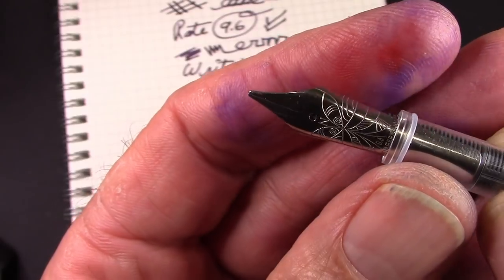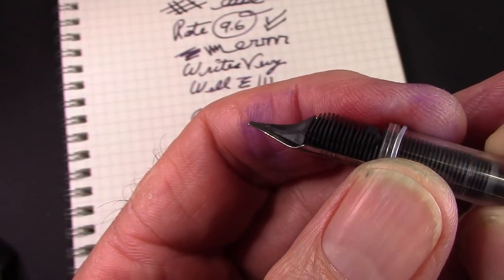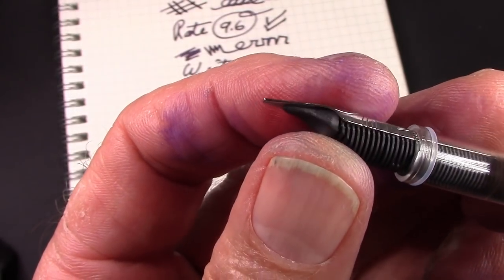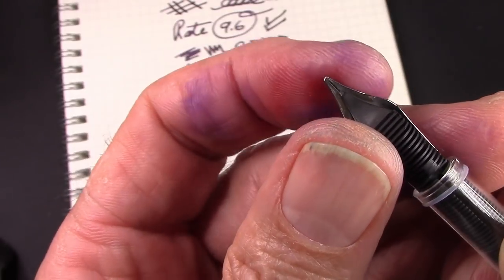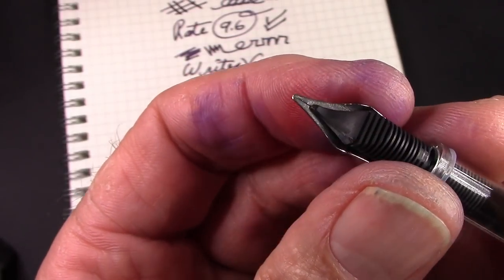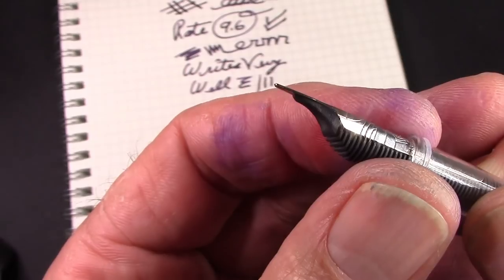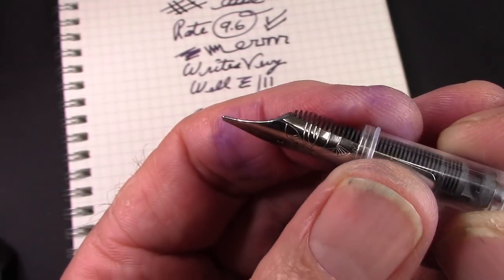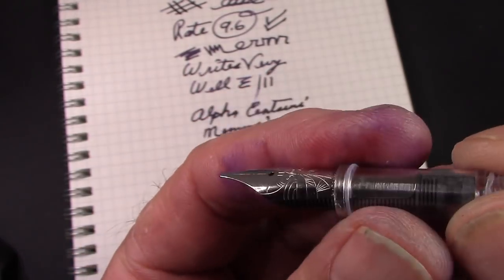That makes it extremely easy to swap in and out. You don't have to worry about bending fins and pulling nibs. That's the same distance between the end of the feed that we had on the broad, and it wrote extremely well, so let's screw this in and see how it works.